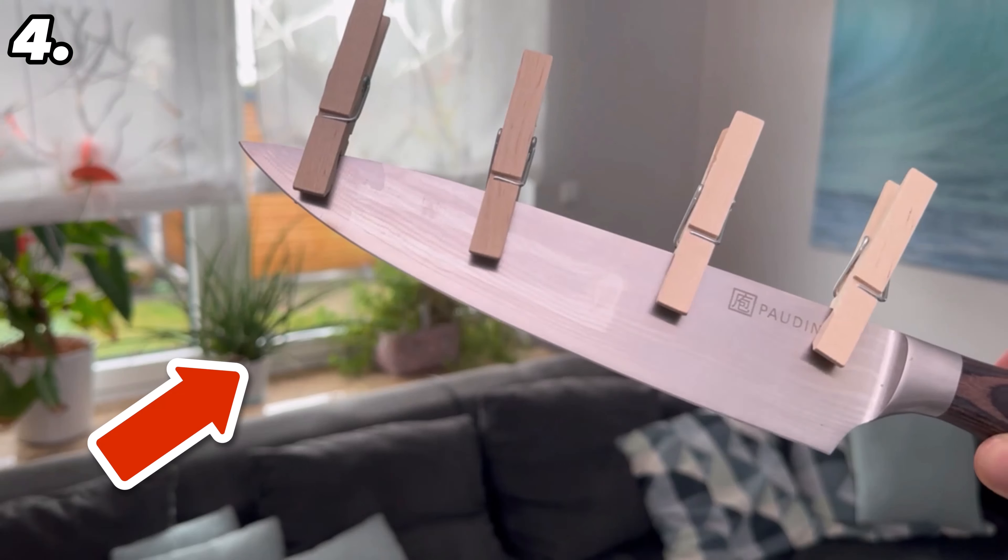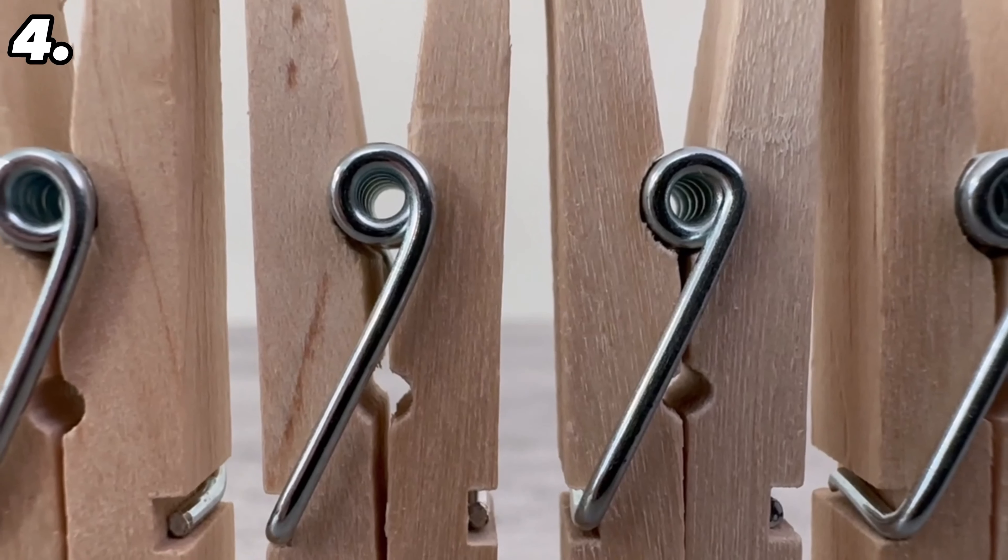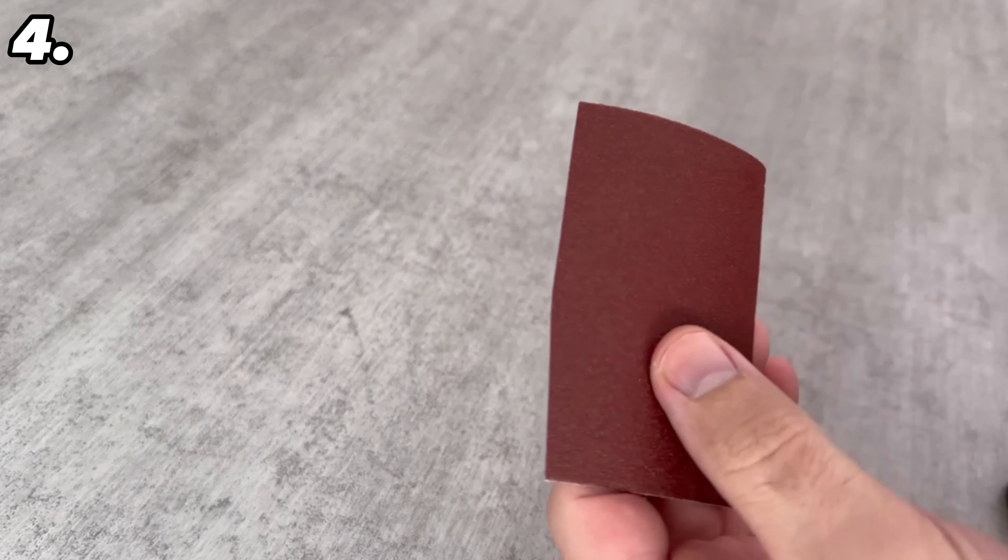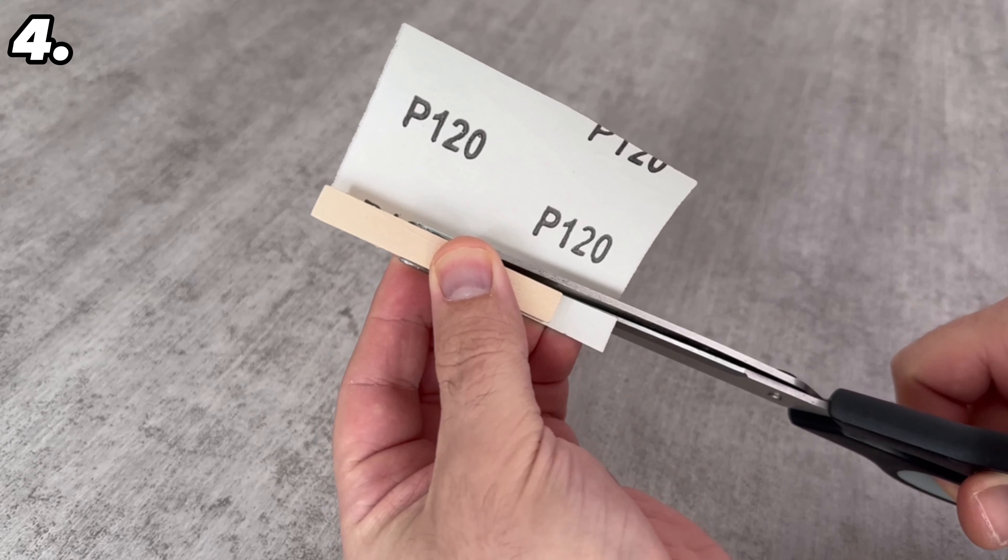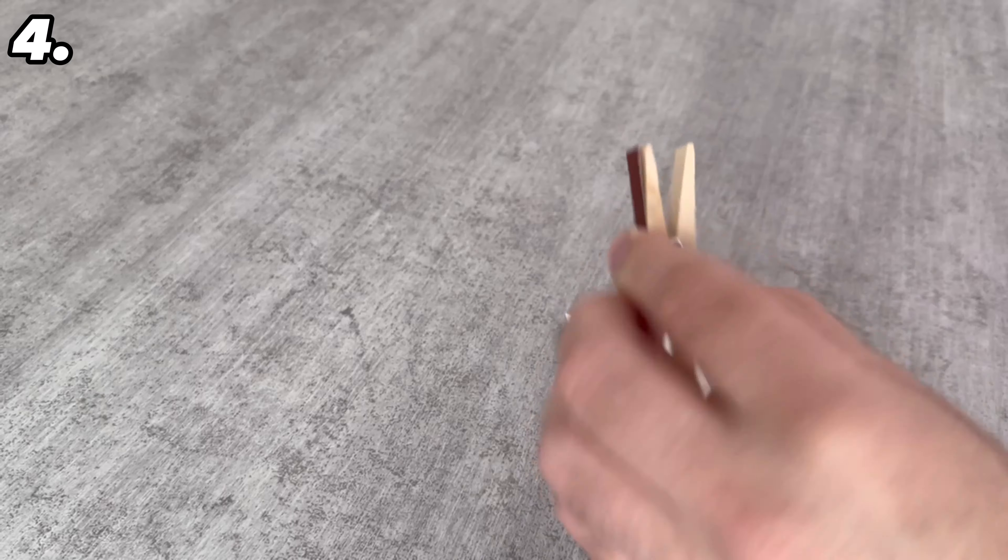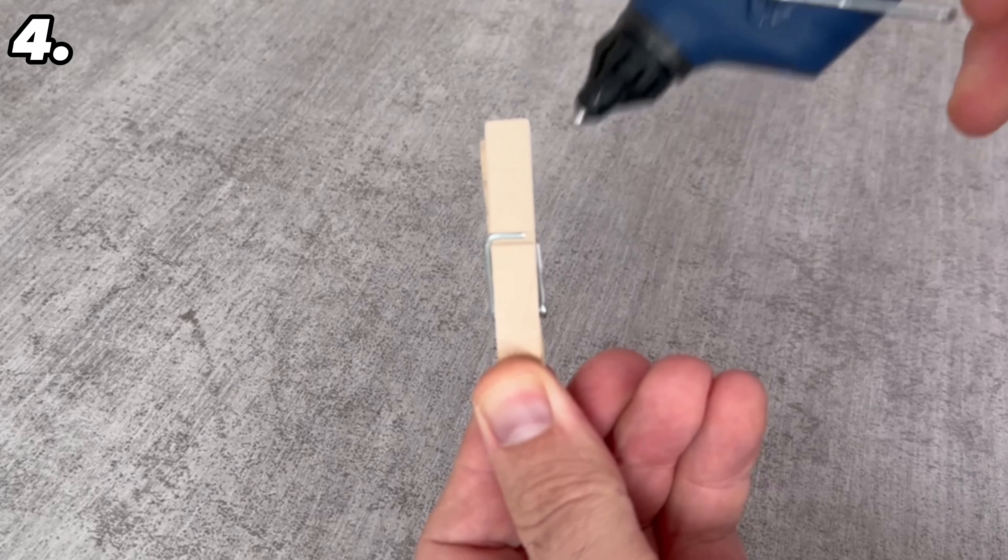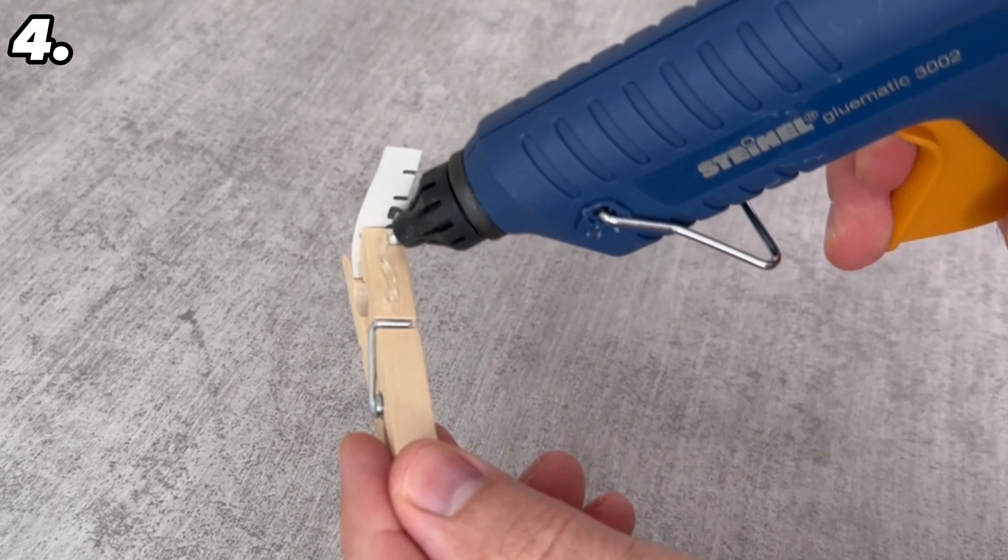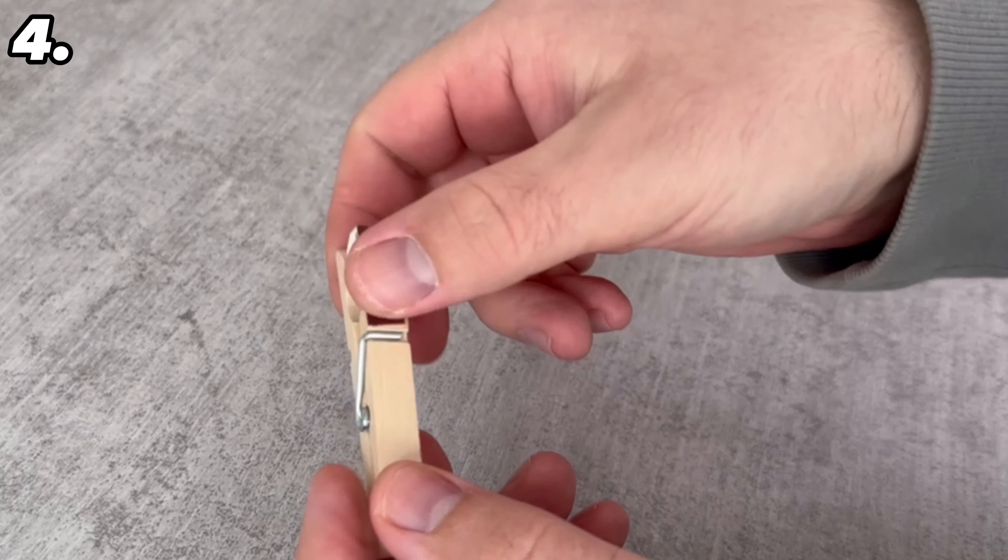This brings us to our fourth trick. For this one we want to use clothespins on our knife. What you need is a hot glue gun and some sandpaper. Grab some sandpaper, hold the clothespin here and cut it to the exact width of the clothespin. Once you have cut it to size, carefully open the clothespin, take a hot glue gun, apply hot glue to the inside and place the first piece of sandpaper here. Repeat this process on the other side, then wait until the whole thing has hardened.